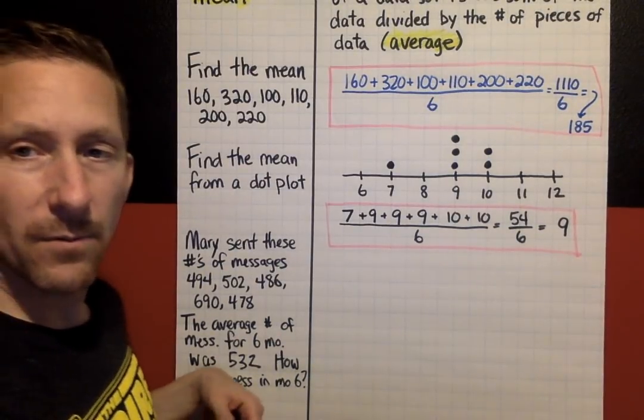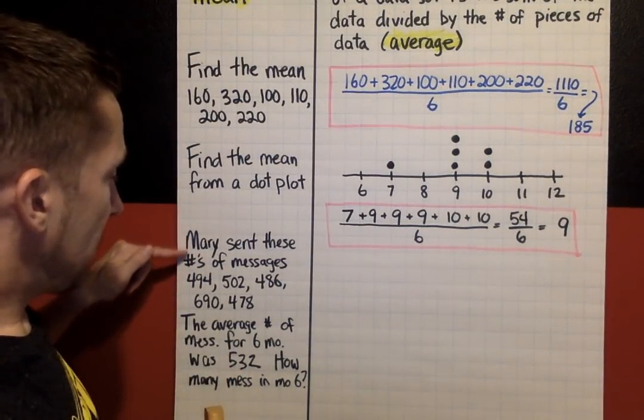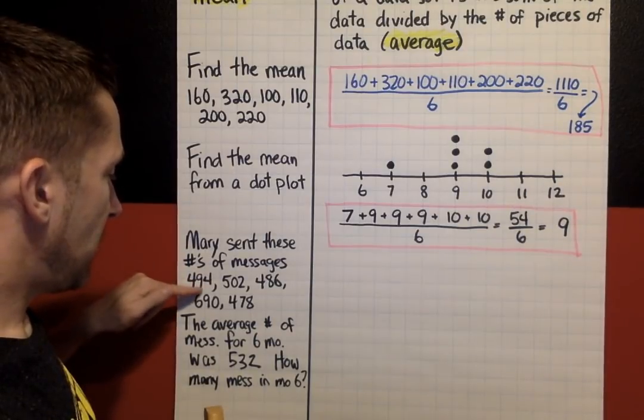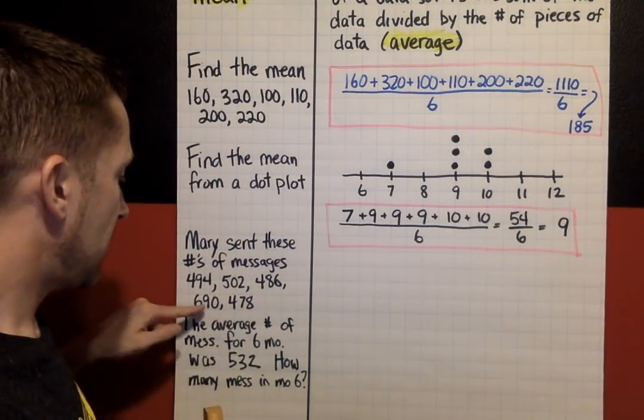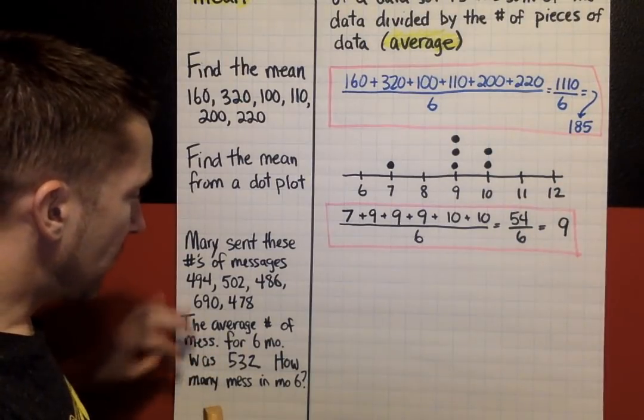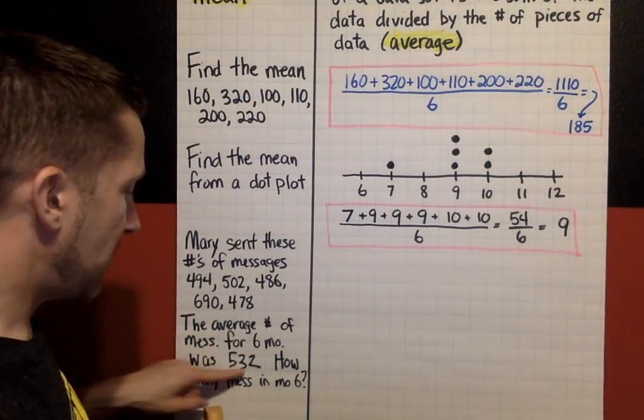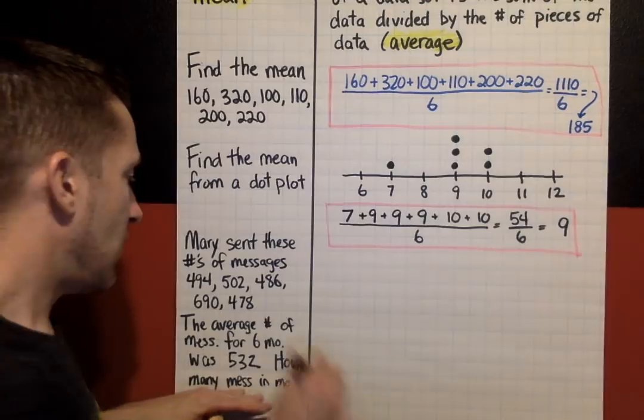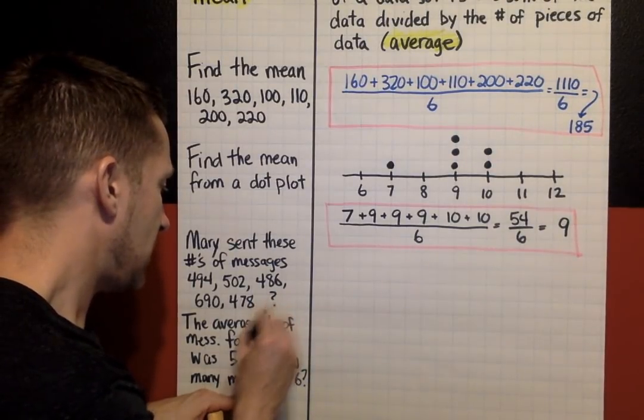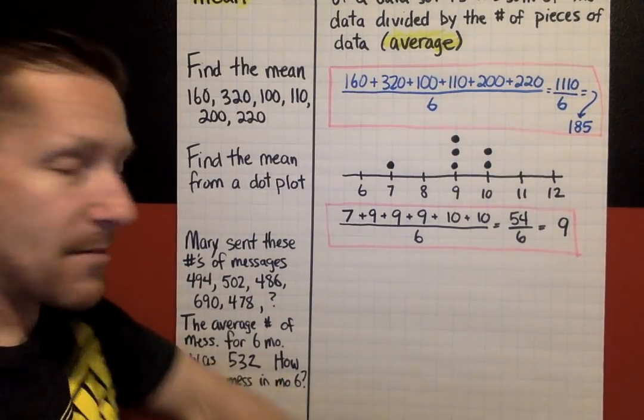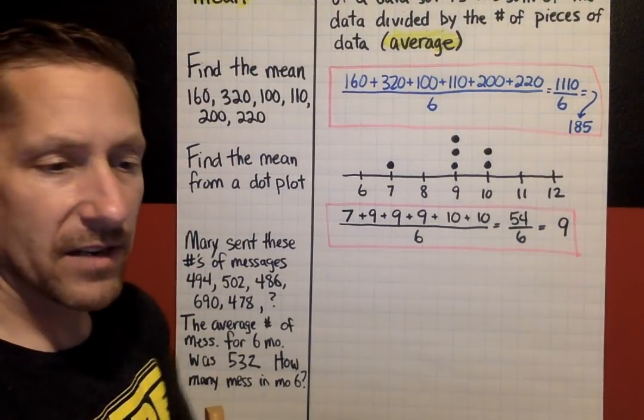Let's go through that problem one more time. She sent these number of messages: 494, 502, 486, 690, and 478. And over six months, her average was 532. But we don't know the sixth month. So we're trying to find, well, how many messages did she send during that sixth month?